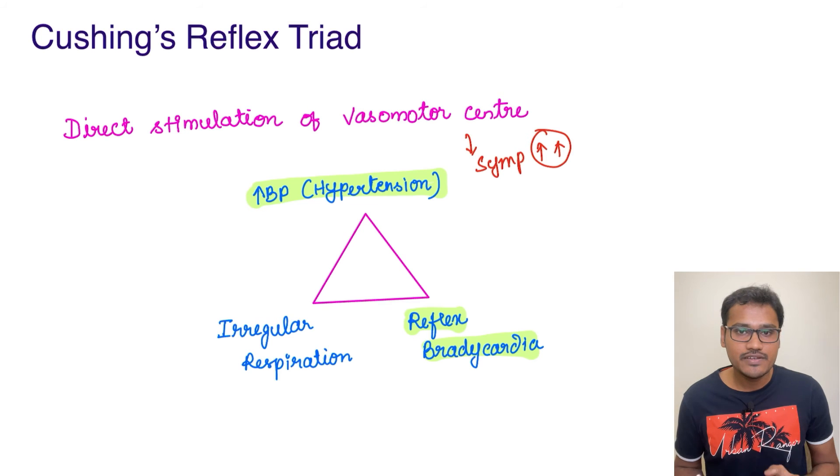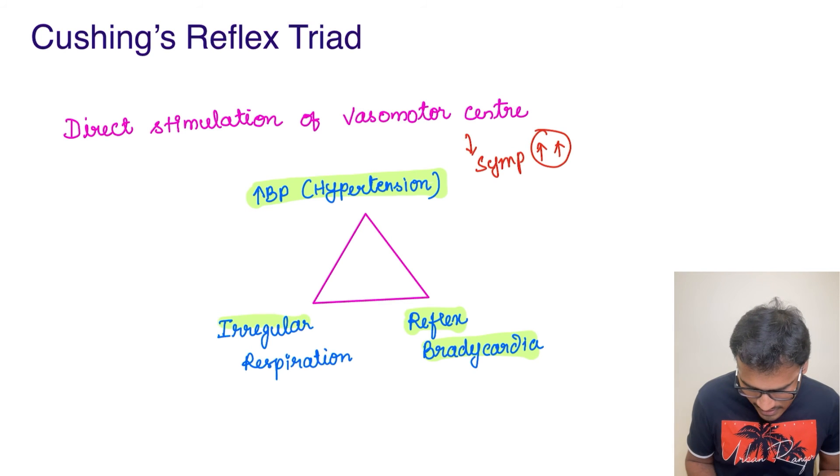Because of the raised BP levels, the bradycardia is happening, and the respiratory centers are also affected which leads to irregular respiration.